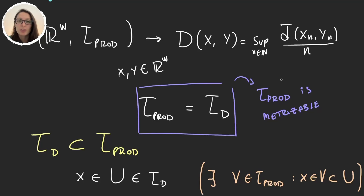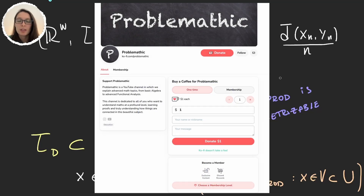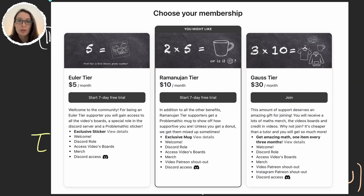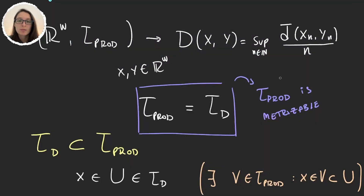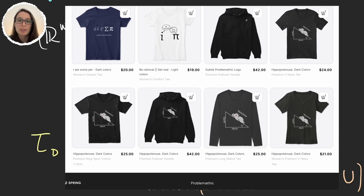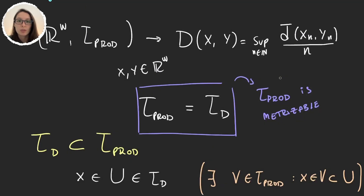If you want to support the channel, you can do so in different ways. You can either donate or become a member on Ko-fi to get exclusive access to content. If you also want merchandise, you can become a member on Patreon. Or if all you want is the merchandise, you can buy t-shirts or other items in our store.